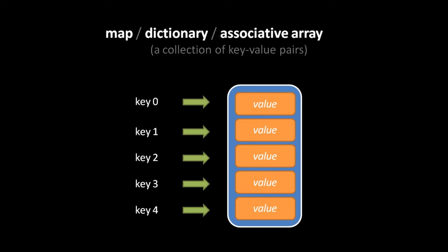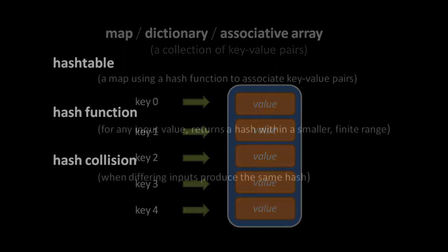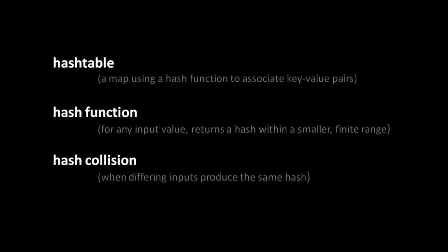For example, we can use a five-element array for a map as long as keys are limited to integers 0 to 4, storing values at the slot associated with each key — so the value of key 2 is stored at index 2. While much more efficient, this is much more constrained. Ideally, what we want is a map with the efficiency of an array implementation yet which allows us to use any possible key. The solution is what's called a hash table, which is a map that uses a hash function to associate key-value pairs. A hash function takes any input value and returns an output value — a hash — constrained to a smaller, finite range. Because the set of possible inputs is always larger than the possible outputs, multiple inputs will inevitably produce the same output, called a hash collision.